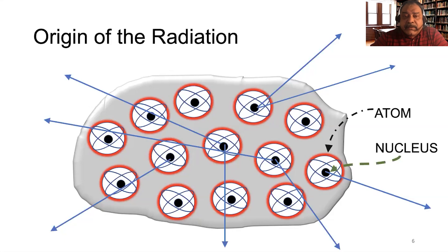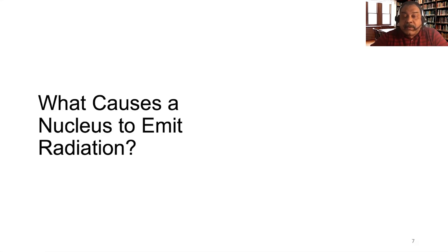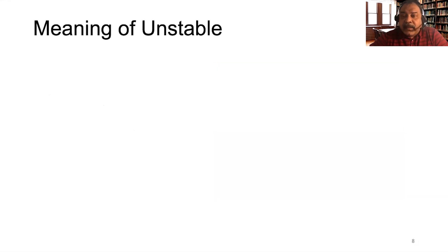We can still ask more questions. We know the radiation comes from the nucleus. The question now is: what causes a nucleus to emit radiation? Why would a nucleus emit radiation? The short answer is that the nucleus is unstable. So now the question is: what is the meaning of the word 'unstable'? I'd like to go through a little discussion to understand the meaning of stability in physics, because that's really what causes the nucleus to emit radiation.